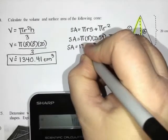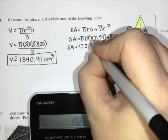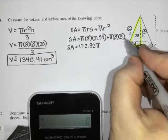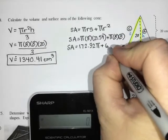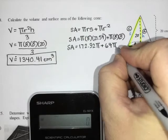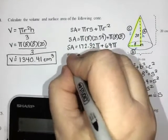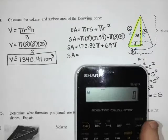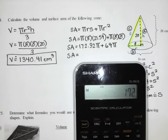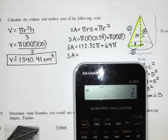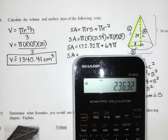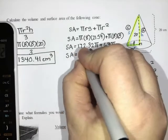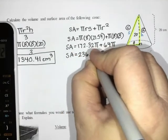This is 172.32 still times pi. And then eight times eight is 64, and then that's times pi. So I can collect like terms here. They both have pi.